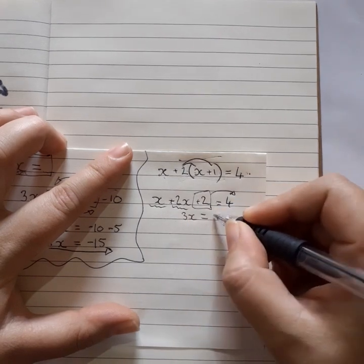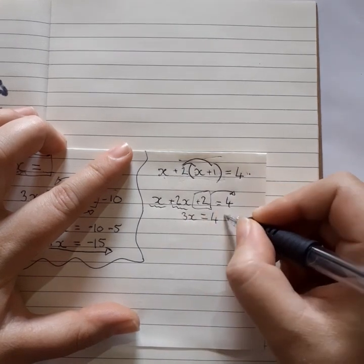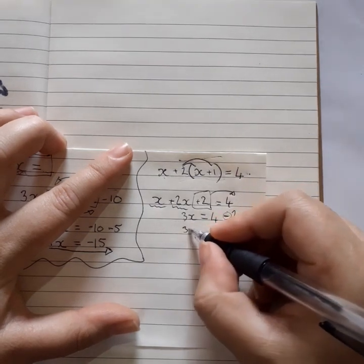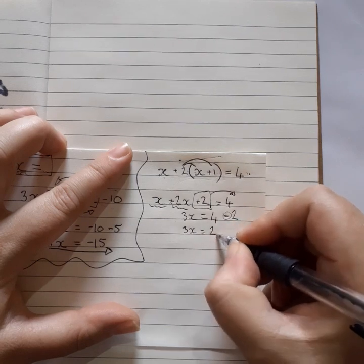Write what you have, write what removed, and change the sign. So now we've got 3x equals 2.